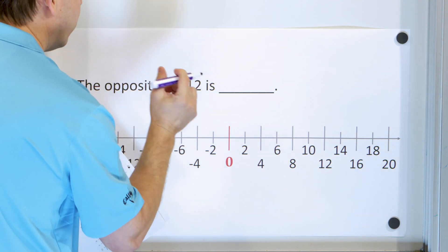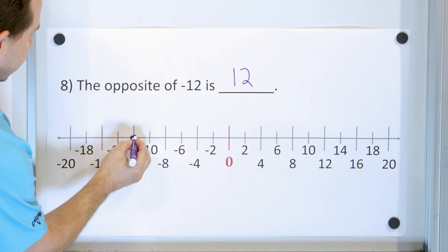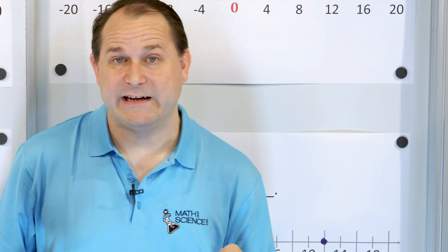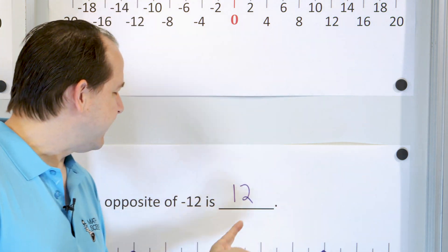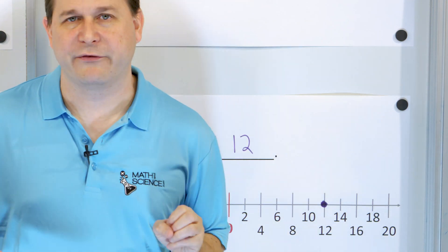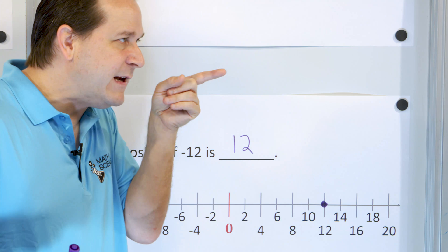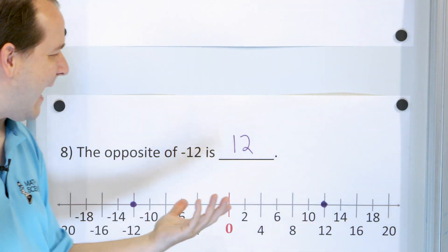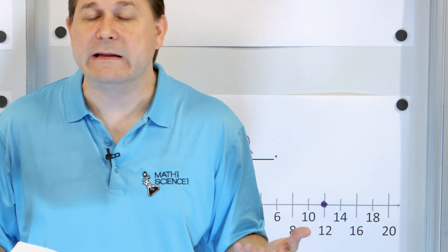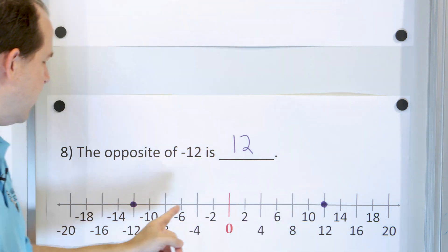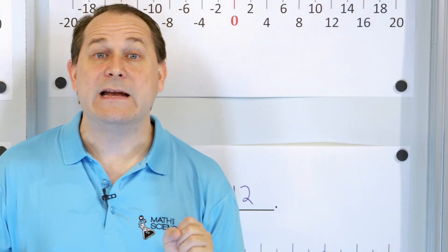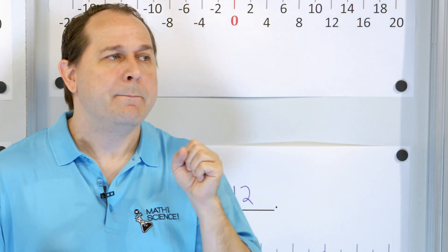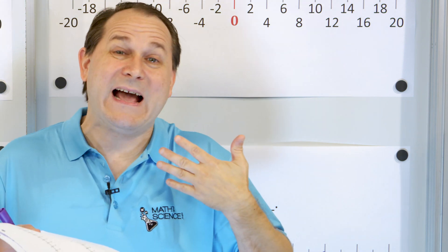The opposite of negative 12 is positive 12. Here is negative 12 on the number line, and the opposite would be 12 units the same distance away as a mirror image. Another interpretation: velocity. If zero meters per second is your starting velocity, and going 12 meters per second in this direction is the positive direction, then positive 12 means I'm traveling this way at 12 meters per second. Negative 12 meters per second means I'm still traveling the same speed — 12 meters per second — but I'm going the other direction. Positive speed means I go that way; negative speed means I go this way.